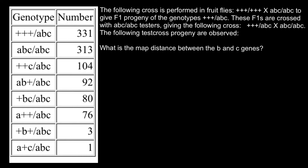Here we are interested in this particular cross. The slash separates two chromosomes. Here is one chromosome and here is another chromosome. On one we have small a, small b, and small c, and on the other we also have small a, small b, and small c.